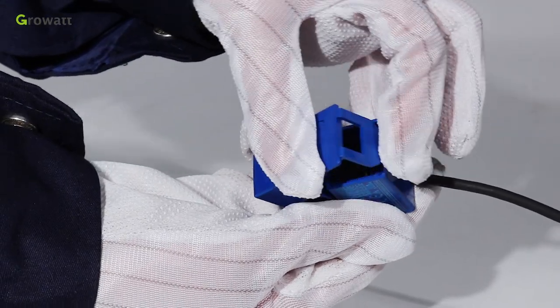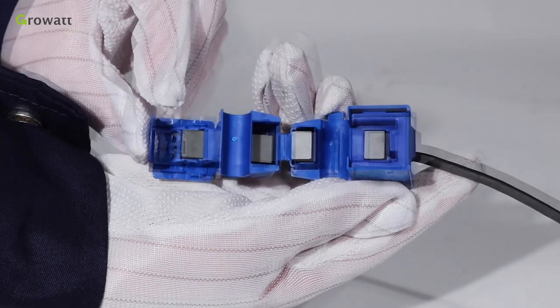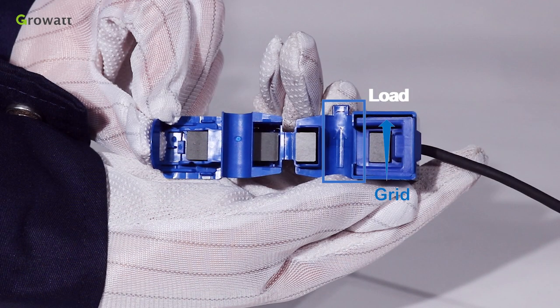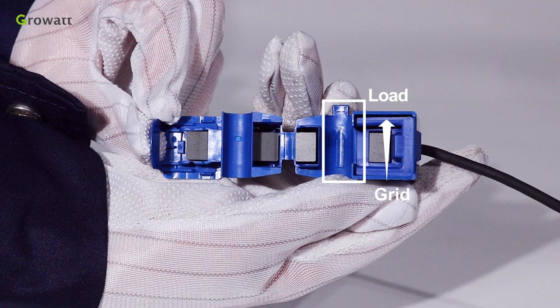Pay attention to the direction of the CT as illustrated. Open the current transformer and you can see an arrow labeled on it, which indicates the current direction. The direction of the arrow means from public grid to user load.